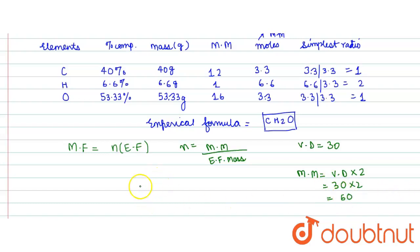Now therefore, value of n comes out to be 60 divided by... now we need to calculate the empirical formula mass. Empirical formula mass for CH2O, that is carbon is 12 plus 2 into 1 plus 16.